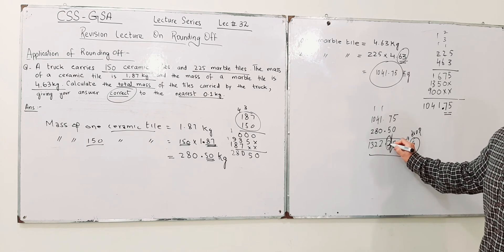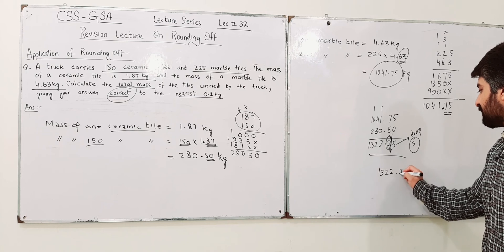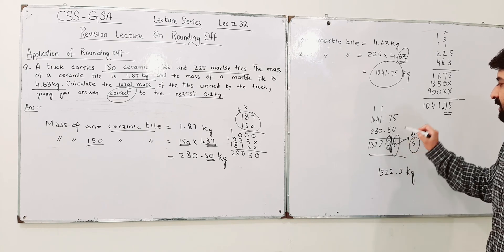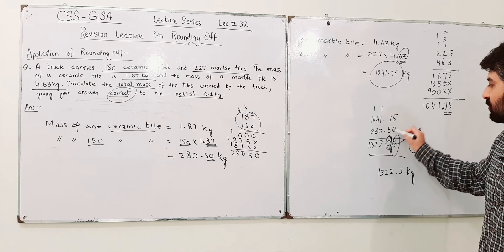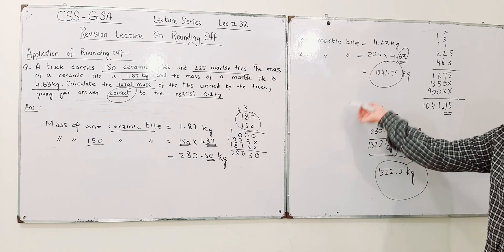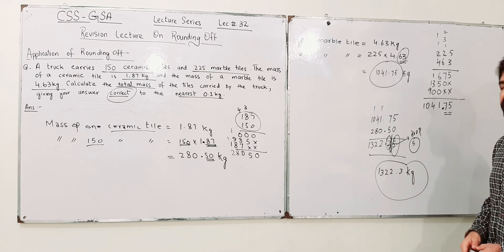Because this is 5 and when you are dropping a number which is 5 or greater than 5, you will increase the previous digit by 1. So your answer will be 1322.3 kg because you have dropped this one. This is 5, and if it is 5 or greater than 5 you need to increase the previous digit by 1. So this is your final answer. The mass of ceramic and marble tiles will be 1322.3 kg.